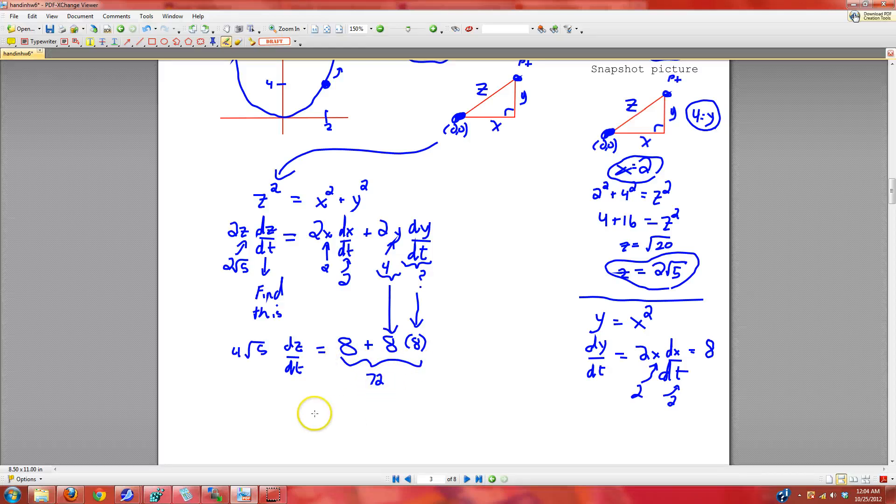4 goes into 72 18 times. But some people don't like roots on the denominator, so we have to rationalize by multiplying top and bottom by root 5, and what we end up getting is 18 root 5 over 5.